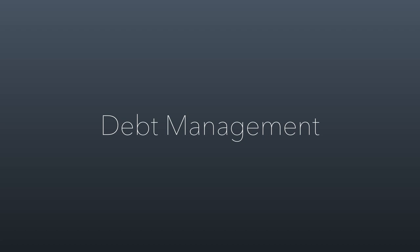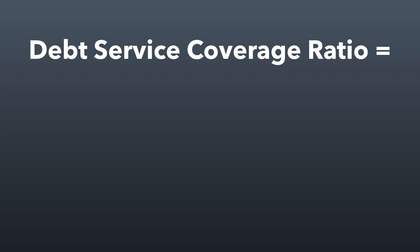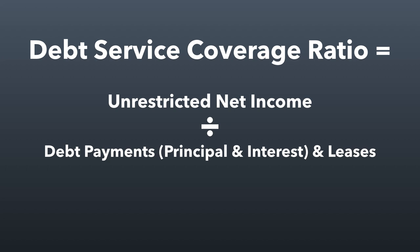Now let's talk about debt management. I want to discuss a concept called a debt service coverage ratio, or debt service ratio. This is essentially a measurement of how well you can manage your debt obligations. Banks use this calculation when you want to borrow money — they figure out how much you want to borrow, what that equates to in regular payments, and then weigh those payments against how much surplus cash you bring in. You basically look for unrestricted net income: all income after expenses. After you pay for operations, do you have a surplus, and how much is it? Then you divide that amount by the debt payments involved — principal, interest, and any leases.